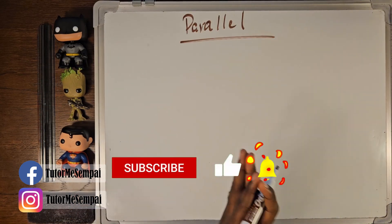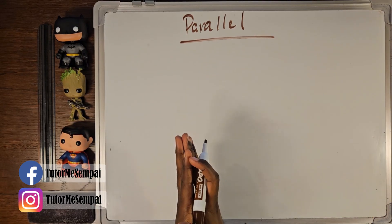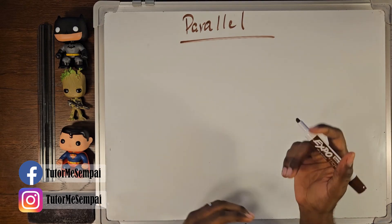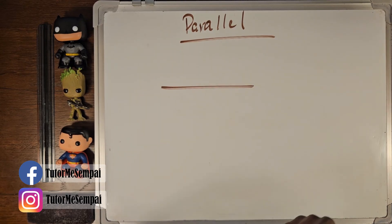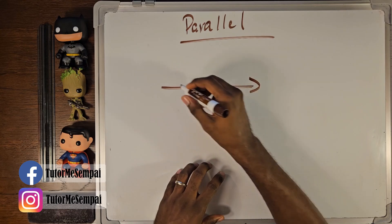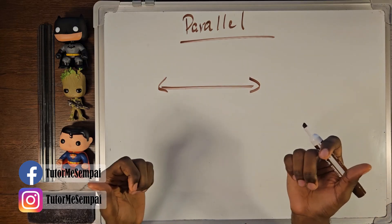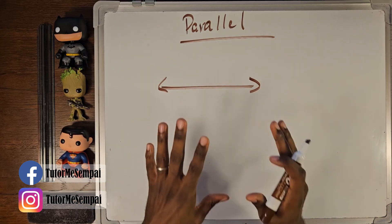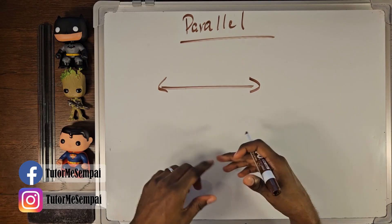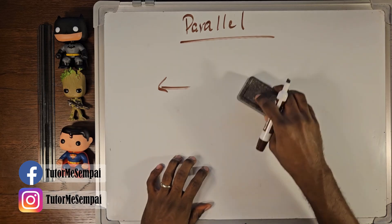We're gonna start off talking about parallel lines, but first let's have a quick reminder about what a line is. On this channel we've covered lines, line segments, and rays. The lines we're talking about need to have arrows at the end, which lets us know the line goes on forever and ever in both directions. Those are the lines we'll be covering when talking about parallel, intersecting, and perpendicular.